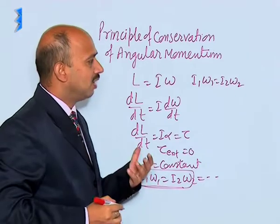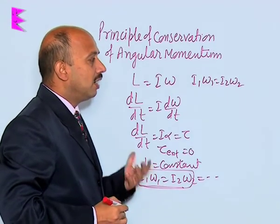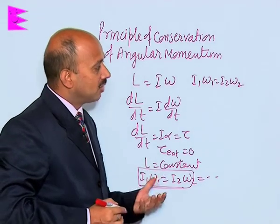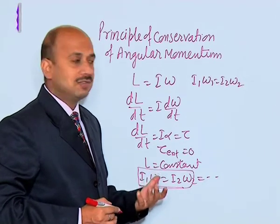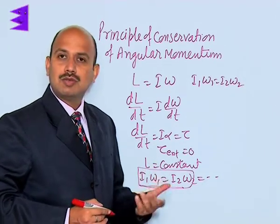Suppose the ballet dancer is dancing and in that case she has stretched her hand and leg. In that case, moment of inertia is larger and it has got certain angular velocity.